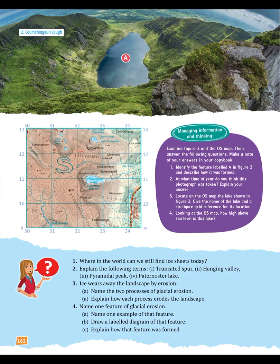Also please do the four questions at the bottom of page 162 in the blue area. Question one: where in the world can we still find ice sheets today? You can look back through the chapter or Google it. Question two: explain in one or two sentences each of the following — truncated spur, hanging valley, pyramidal peak, and paternoster lake. Question three: name the two processes of glacial erosion and explain how each process erodes the landscape. Question four: name one feature of glacial erosion — that's your U-shaped or glaciated valley. Draw a labelled diagram of it in your softback and explain how it was formed. Make sure you use the words plucking and abrasion. Thanks.